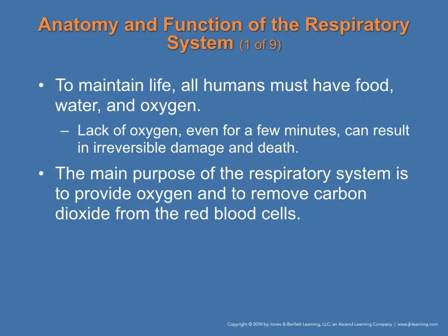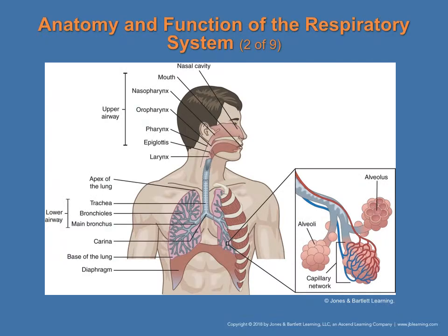The main purpose of the respiratory system is to provide oxygen and to remove carbon dioxide from the red blood cells. Carbon dioxide is a waste product the body produces, and the lungs are where the gas exchange takes place — you breathe in oxygen and breathe out carbon dioxide. You have two lungs on both sides of the chest, and you can breathe through your nose or through your mouth.